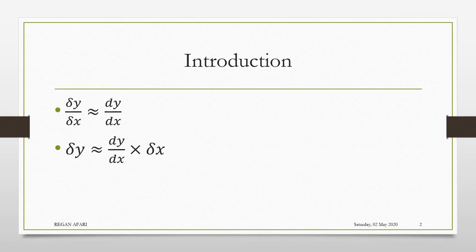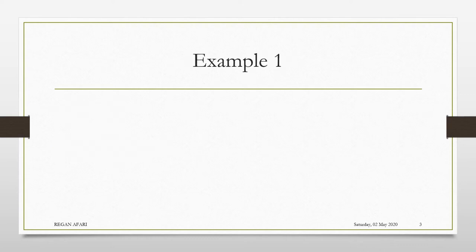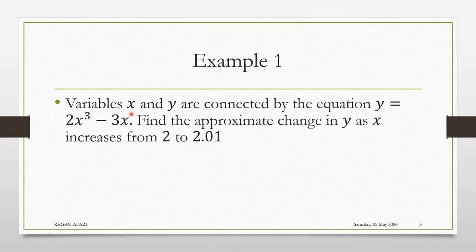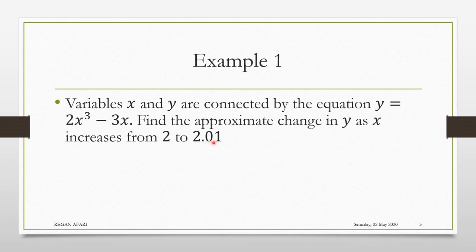To look for the slight change in y, you have to multiply your small change in x by the differential of the function. Let's take an example. Variables x and y are connected by the equation y = 2x³ − 3x. Our job is to find the approximate change in y as x increases from 2 to 2.01. The change is very small — from 2 to 2.01, which means it has increased by 0.01.